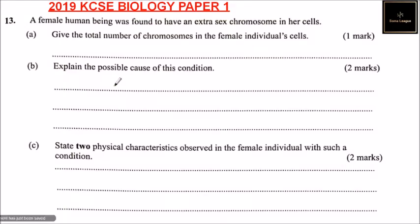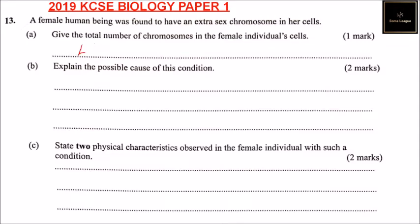Question number 13: a female human being was found to have an extra sex chromosome in her cells. They give the total number of chromosomes in the female individual's cell. A normal human female normally has 46 chromosomes, but since this one has an extra, the individual has 47 chromosomes.